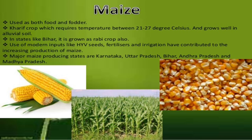Maize is used as both food and fodder. It is a Kharif crop which requires temperature between 21 to 27 degrees Celsius and grows well in alluvial soil. In states like Bihar, it is also grown as a Rabi crop. Use of modern inputs like HYV seeds, fertilizer and irrigation have contributed to the increasing production of maize. Major producing states are Karnataka, Uttar Pradesh, Bihar, Andhra Pradesh and Madhya Pradesh.